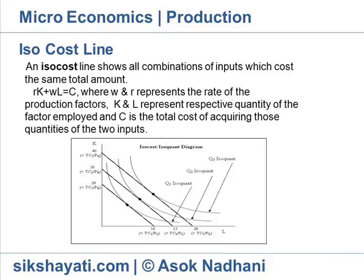For example: W represents the wage rate of labor, R represents the rental rate of capital, K is the amount of capital used, L is the amount of labor used, and C is the total cost of acquiring those quantities of the two inputs. The absolute value of the slope of the isocost line — with capital plotted vertically and labor plotted horizontally — equals the ratio of the unit cost of labor to capital. The slope is minus W over R.